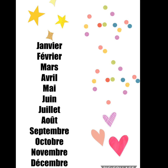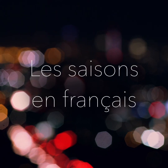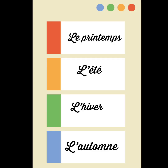Now let's move to the seasons. Like in every part of the world, the French people also enjoy four different climates. These are the four different climates. As we see, le printemps means the spring, l'été means the summer, l'hiver means the winter, and l'automne means the autumn.